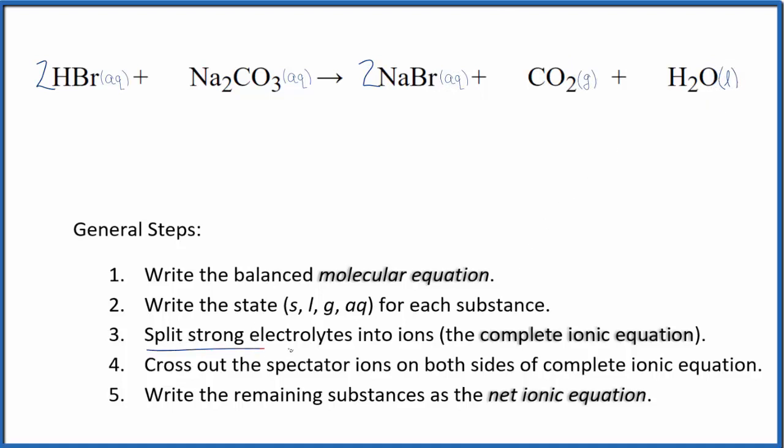Now we can split the strong electrolytes into their ions. That's going to give us the complete ionic equation. So for the HBr, hydrogen is in group 1, that's going to be 1+. The bromide ion is 1-. So we'll have two hydrogen ions, H+, I'll write the states later, plus two bromide ions.